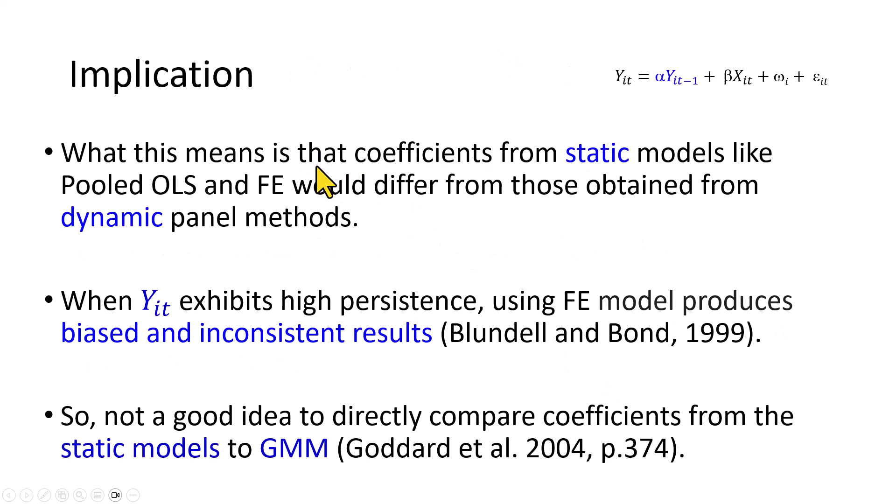What this means is that coefficients from static models like Pooled OLS and Fixed Effects would naturally differ from those obtained from Dynamic Panel methods. Because when Y, the dependent variable, exhibits high persistence, using these static models would produce biased and inconsistent results, as Blundell and Bond have noted. And so it's not really a good idea to directly compare coefficients from static models to those obtained from panel data GMM estimation.